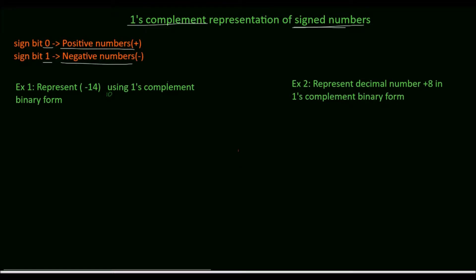First we'll solve example 1: represent the decimal number minus 14 using one's complement binary form. First we'll write the binary equivalent of 14. In binary, the weights are 1, 2, 4, 8 from right to left. So the decimal number 14 is equivalent to 1 1 1 0 in binary.